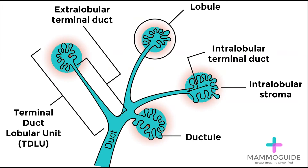The terminal ductal lobular unit is like a network of branching tubes ending in the lobule. The lobule is the area where milk is made within the breast. The majority of breast pathology, including breast cancer, begins in the terminal ductal lobular unit.